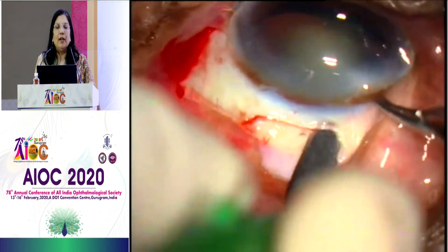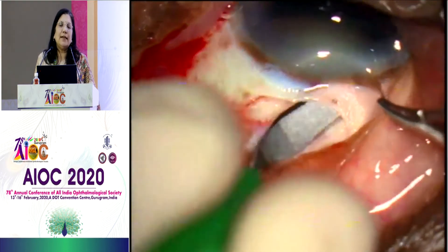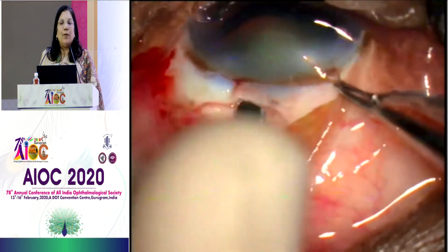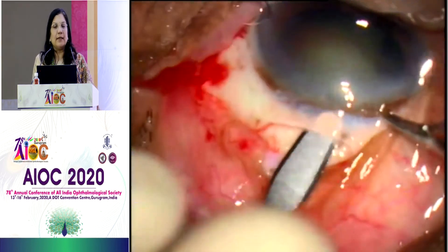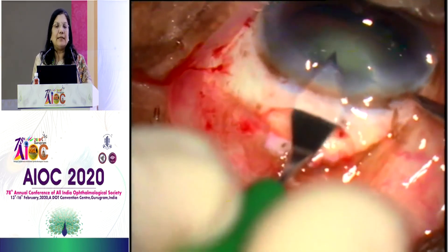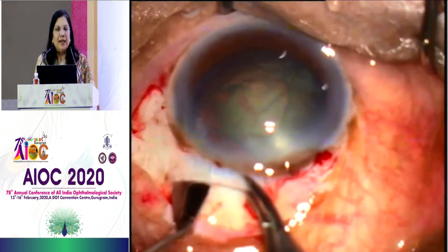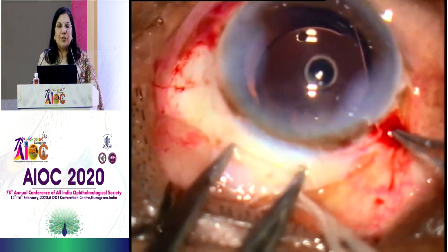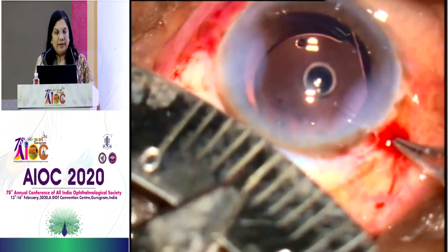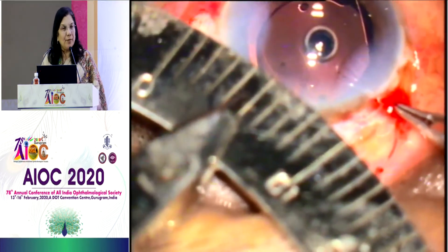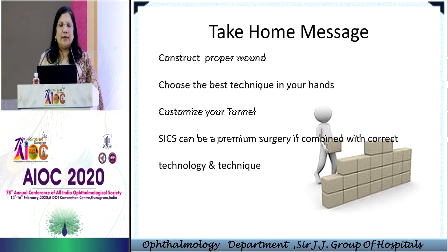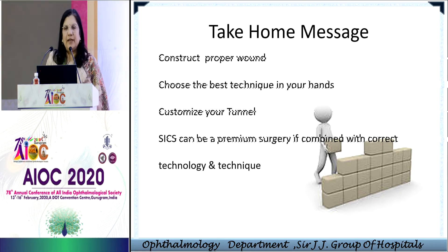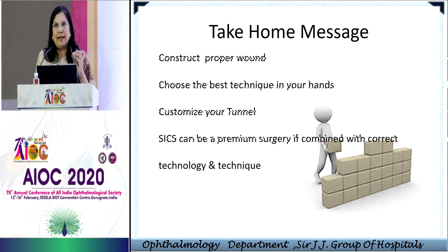This is a modified frown incision, and here is the making of the tunnel with the blade. I very well agree that you should not be holding the incision — keep a little conjunctival tag there to hold the eyeball and fix it. This is very important to dissect the proper tunnel. You can see the dimple — that is the entry inside the eye. After making the rhexis under viscoelastic, this is the extension of the tunnel. The external incision is small, around 4.5 millimeters, and the internal incision is definitely larger. The most important thing is to construct a proper wound, take time to make the tunnel, and choose the best technique in your hands.